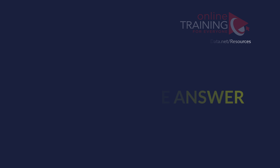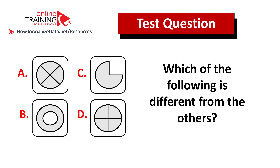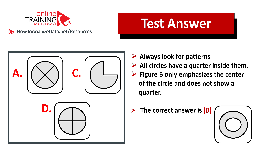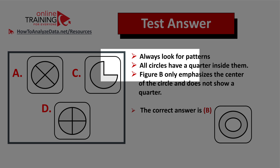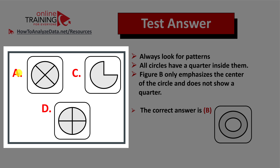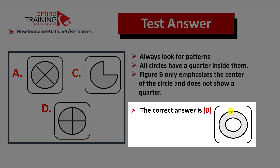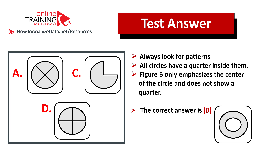Always look for patterns. In this case the pattern is quarters inside the circles. Choices a, c, and d do have quarters inside the circle in different ways, but choice b does not have any quarters — so that is the correct answer. Check out my ebook in the description section for more practice problems.